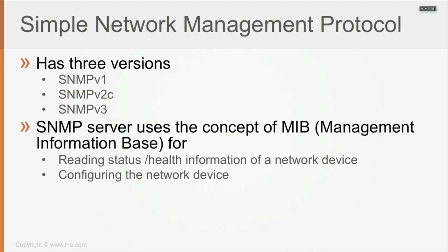For example, you can use SNMP to connect to a device and read its current CPU level. You can also use those MIBs — the Management Information Base — in order to configure the network device remotely. So you can actually change the device's configuration via SNMP.